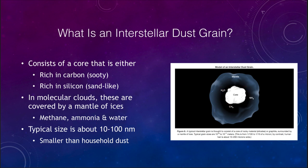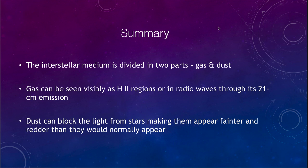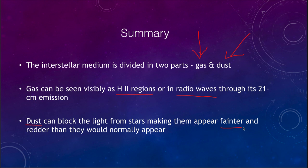To summarize: the interstellar medium is divided into two parts — the gas and the dust. The gas can be seen in various ways: visibly as ionized hydrogen HII regions, or through radio waves as its 21 centimeter emission, among other examples. Dust can block the light from stars, making them appear fainter and redder than they normally would, which has affected our distance determinations in the past before we understood the full extent of dust within our galaxy. That concludes our lecture on the interstellar medium. We'll be back again next time for another topic in astronomy — until then, have a great day everyone.